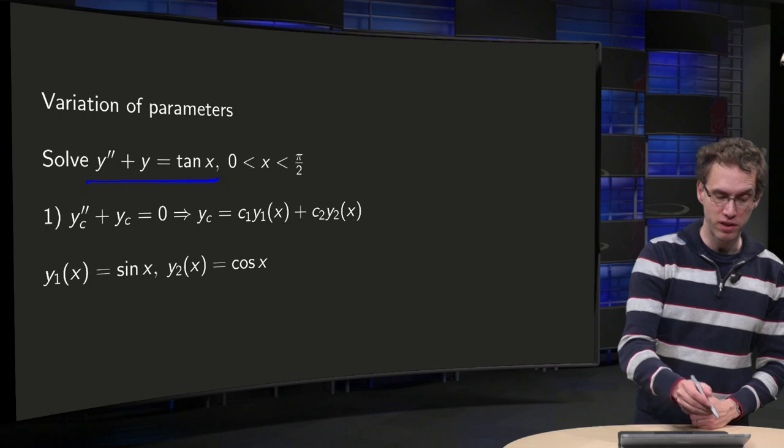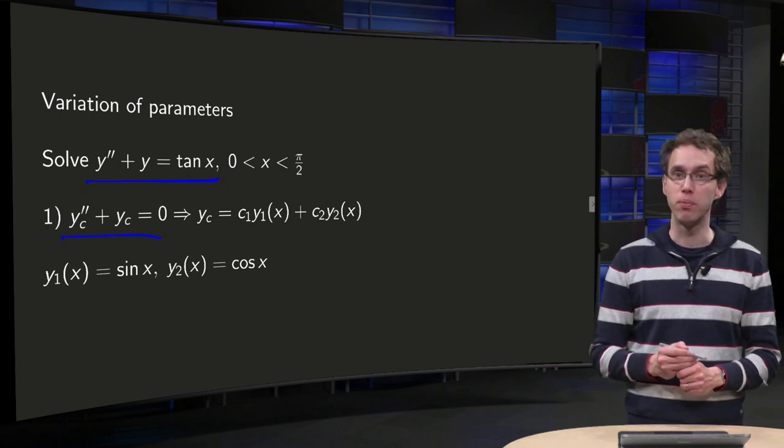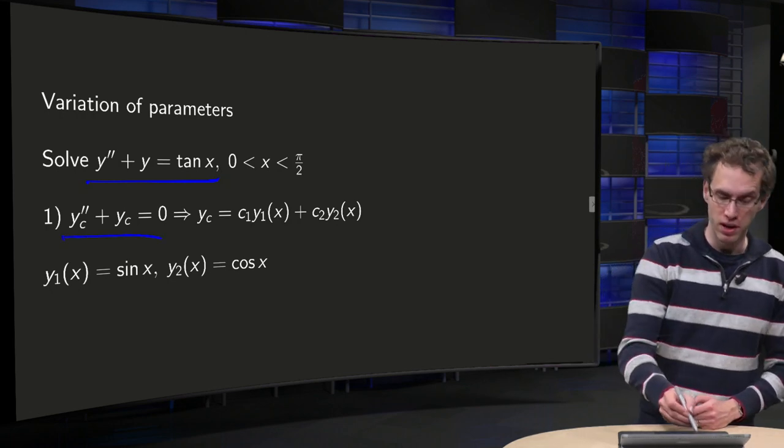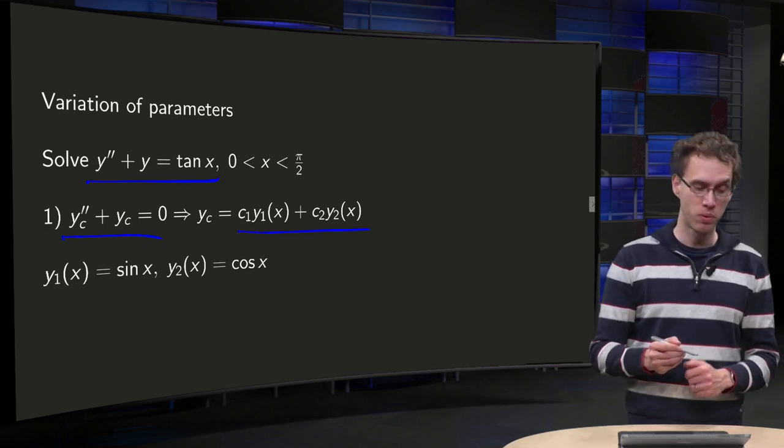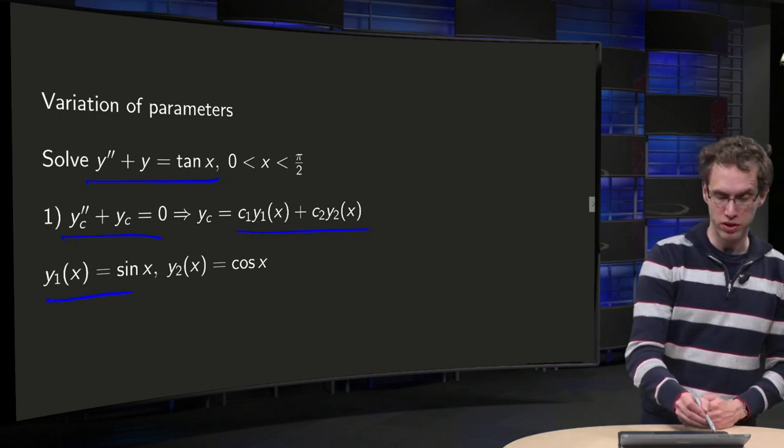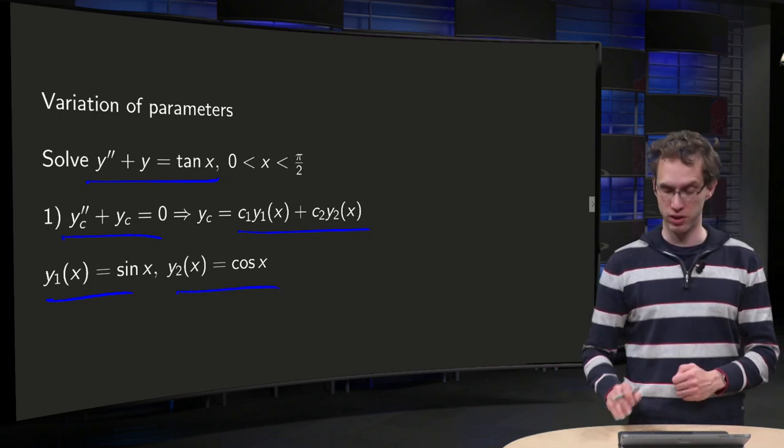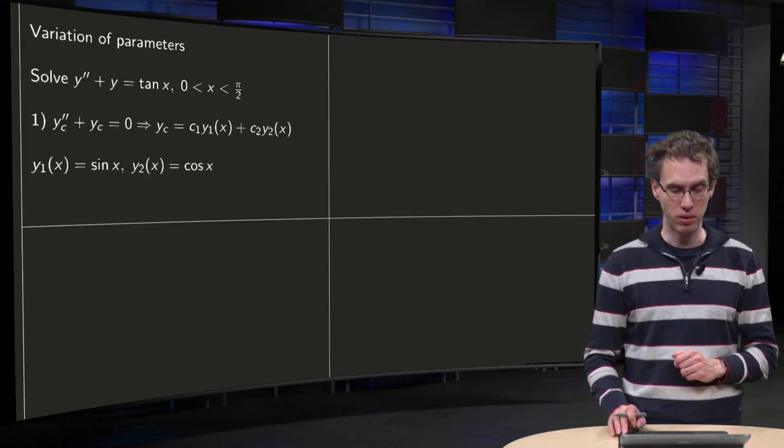First you solve the complementary equation. y'' + y = 0, so you get a complementary linear combination of y₁ and y₂. You know how to do this, you get y₁ = sin(x) and y₂ = cos(x). No problems whatsoever, until here.